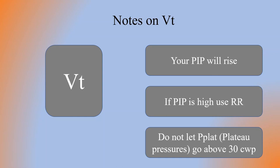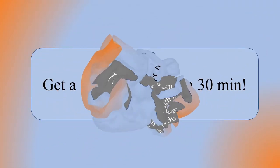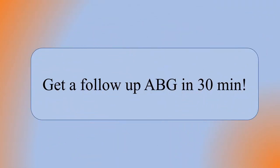Always remember to check your P-plat with an inspiratory hold and do not let the P-plat go above 30 centimeters of water pressure. Do everything you can to prevent the P-plat from going above 30. We always practice lung protective strategies. Don't forget to get a follow-up ABG 30 minutes after you make these vent setting changes to verify that your patient is in a much better place.